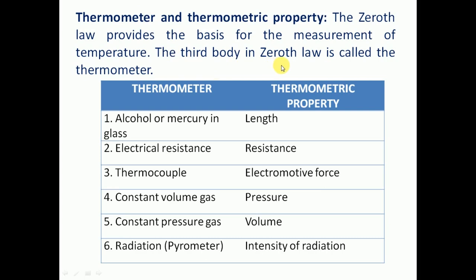The third body which is in thermal equilibrium with the two bodies is called a thermometer, which is used for measuring temperature. The thermometric properties are properties that change with respect to temperature. Different thermometers use different thermometric properties: for alcohol or mercury-in-glass thermometers the thermometric property is length; for electrical resistance thermometers it is resistance; for thermocouples it is electromotive force.